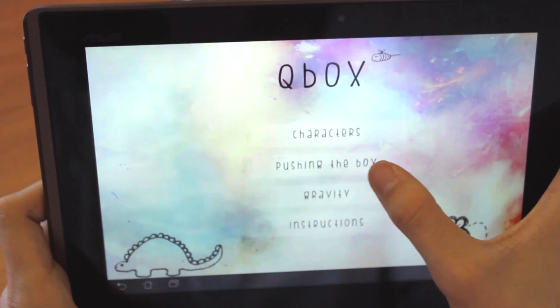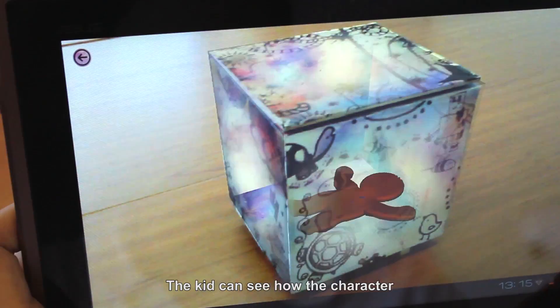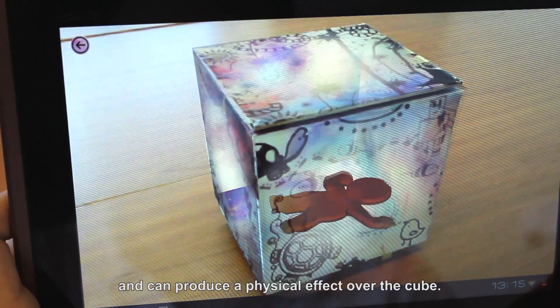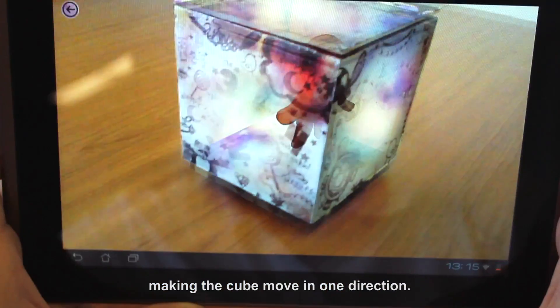Another way of interaction is the possibility to move the cube through the character. The kid can see how the character interacts with the cube and can produce a physical effect over the cube, for example, making the cube move in one direction.